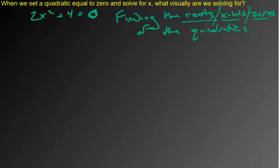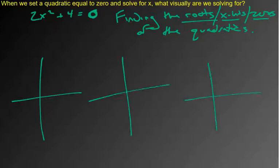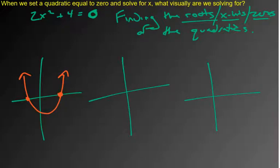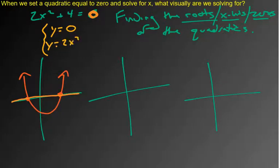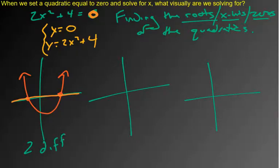The picture helps here. There are actually three cases. The first case is you can have a quadratic that has two different roots — two different x-intercepts or zeros. When we set something equal to zero, that zero is really y equals zero. So we're solving a system of equations: what is the common intersection of y equals zero and y equals 2x squared plus 4? That's all we're doing. You could have a case like this and get two different values, two different solutions.